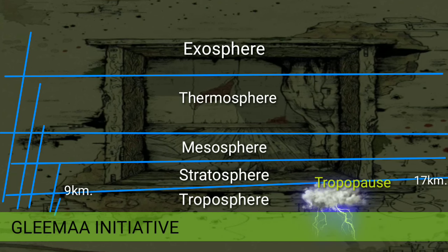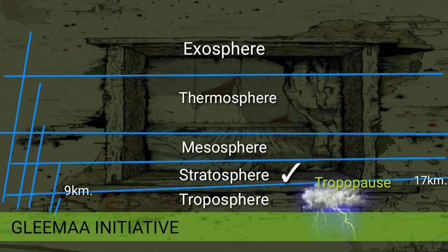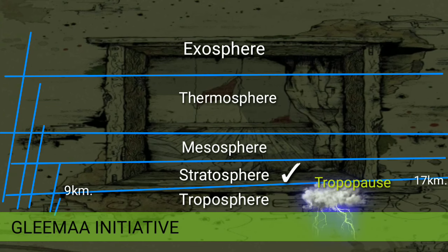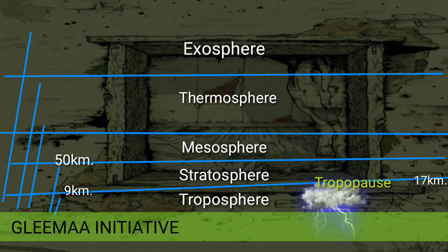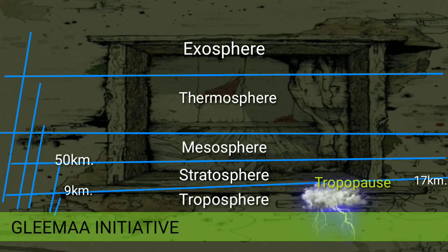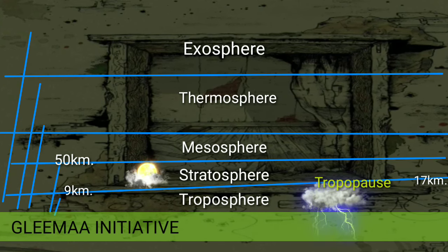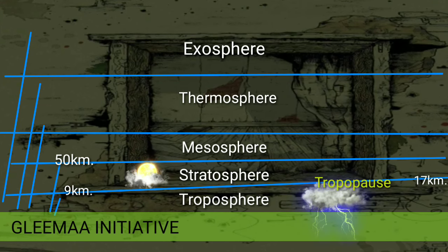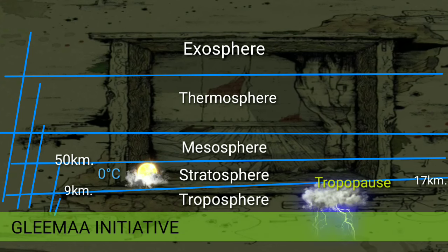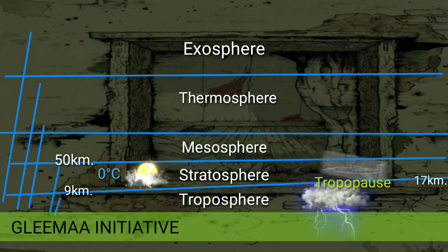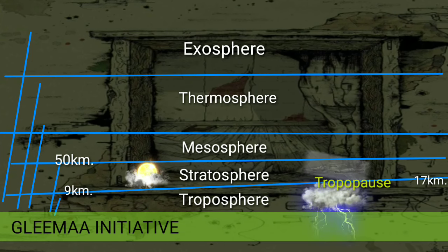Coming to the second lowest layer of the Earth's atmosphere, that is stratosphere. It is above the troposphere and separated from it by tropopause. It lies roughly above 12 kilometers up to an altitude of about 50 to 55 kilometers, and is characterized by increasing temperature with height. It is due to the presence of the ozone layer, which filters sunlight and prevents the harmful UV rays from reaching the Earth's surface. This layer is free from all weather phenomena, therefore it is called the layer of calm and clear air. The stratosphere is best for high-speed jet flights. The upper limit of stratosphere is stratopause.